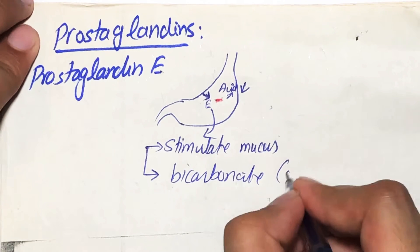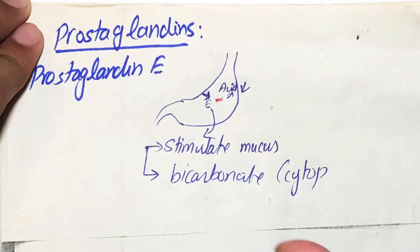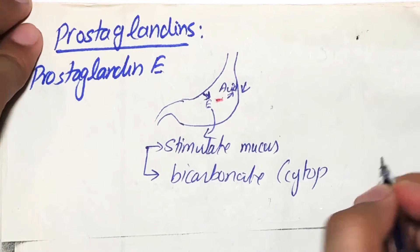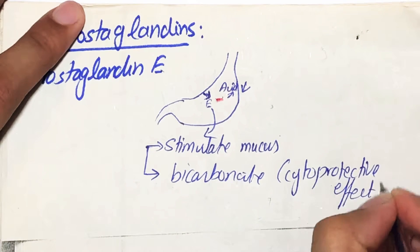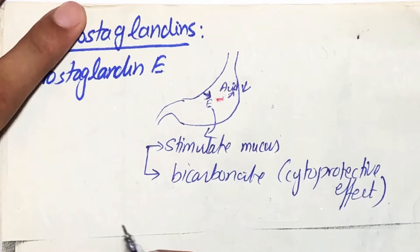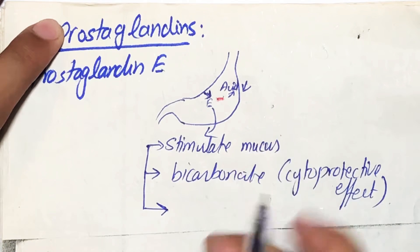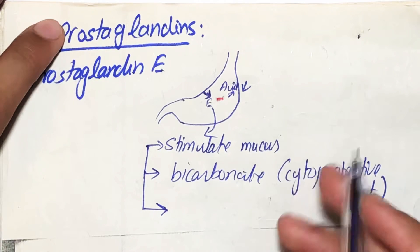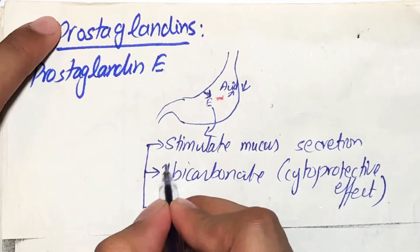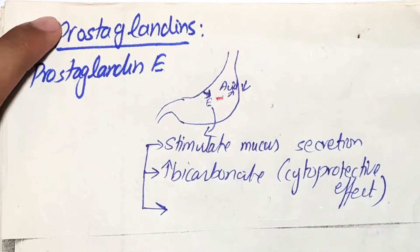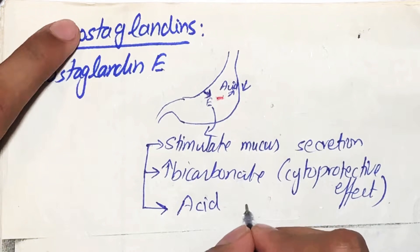Bicarbonates also have a cytoprotective effect, which means they protect your cells of the stomach lining. So now we have learned about prostaglandins — they have three functions: first, they stimulate mucus secretion; second, they increase bicarbonate secretion which has a cytoprotective effect; and third, they inhibit acid secretion.